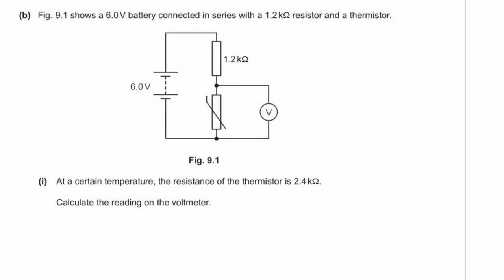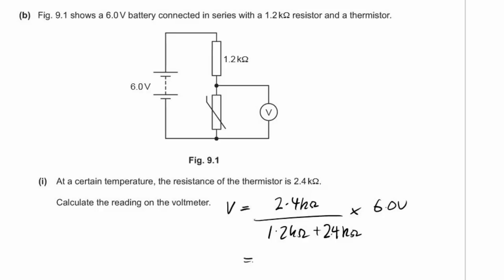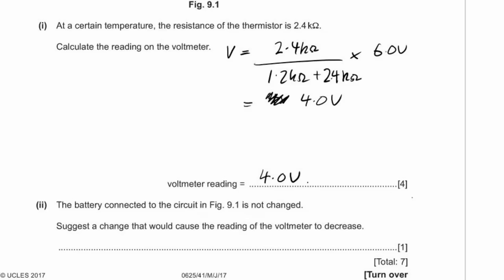Figure 9.1 shows a 6V battery in series with a 1.2 kΩ resistor and a thermistor. At a certain temperature the thermistor resistance is 2.4 kΩ. The voltmeter reading across the thermistor = (2.4 / (1.2 + 2.4)) × 6 = (2.4 / 3.6) × 6 = 4.0 volts. The voltage divider formula is V = R₁/(R₁ + R₂) × Vs.